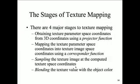You can sample using a sampling technique the textured image at the computed texture space coordinates to see if it fits and if it overlaps. Then you have blending, which takes it and makes the object color even so that it doesn't overlap or fall short.